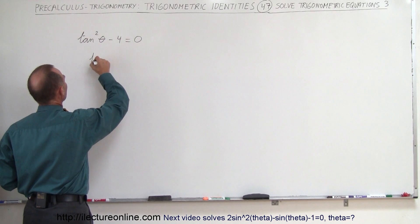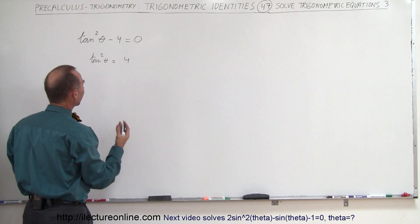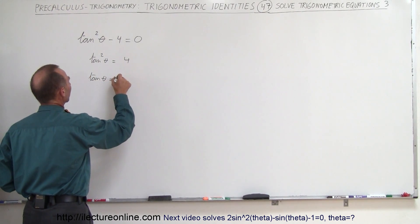So let's first move the negative 4 to the other side. That gives us the tangent squared of theta is equal to positive 4. Taking the square root of both sides, we can then say that the tangent of theta is equal to plus or minus 2.